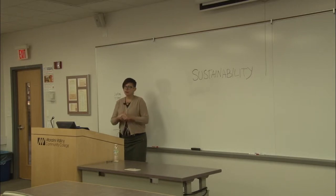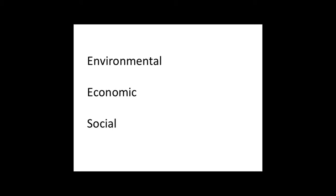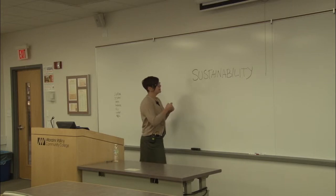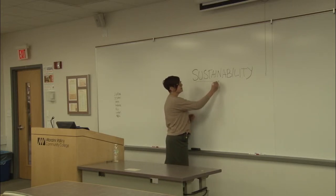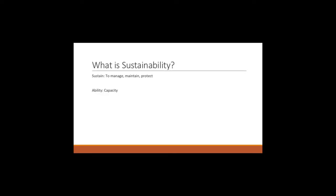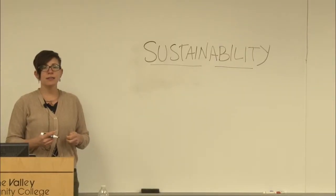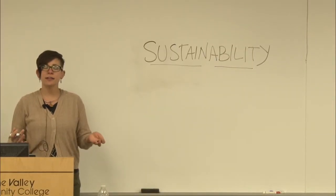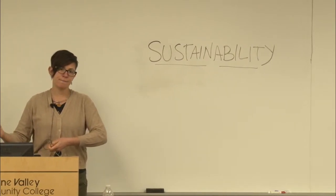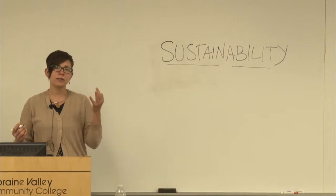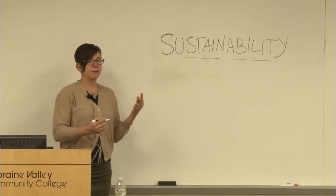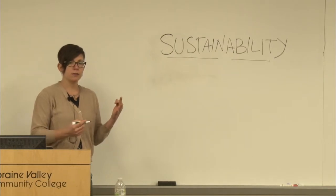So let me break down this economic, environmental, and social sustainability. Sustainability basically means the ability to sustain — the ability to sustain our quality of life into future generations. In order to do that, we need a balance between those three terms. So let's talk about first the environmental term.